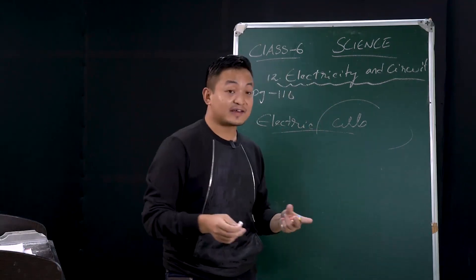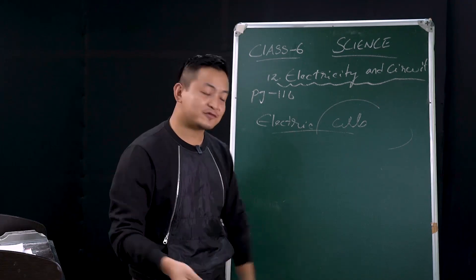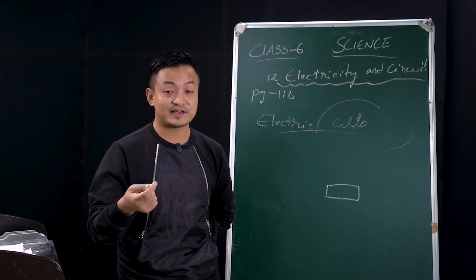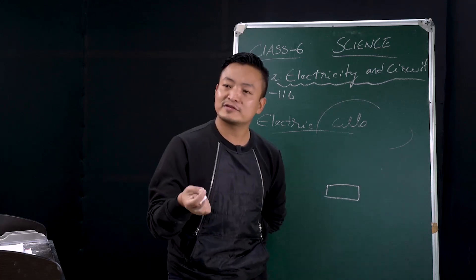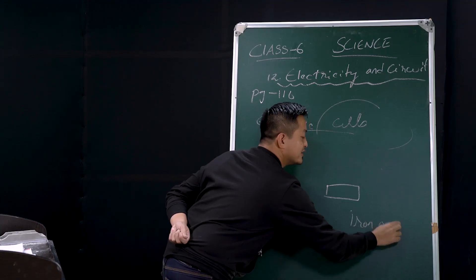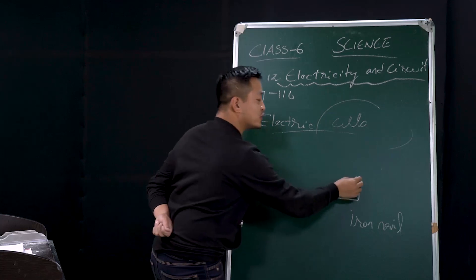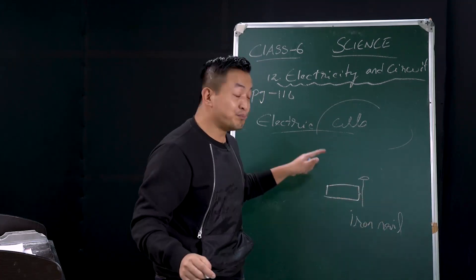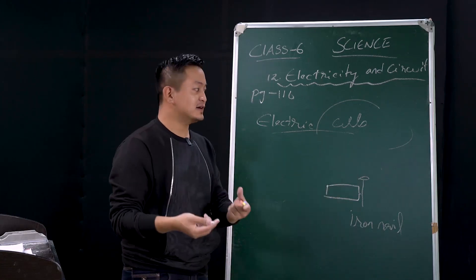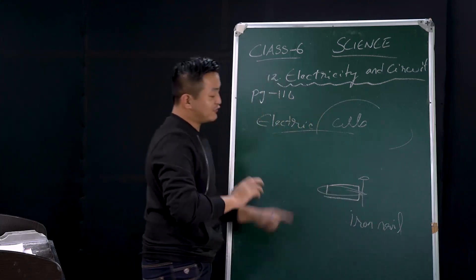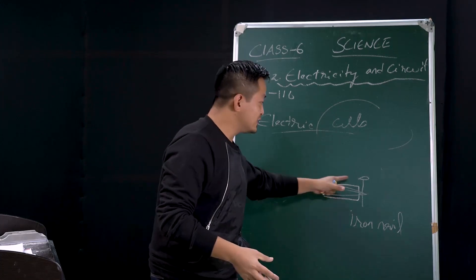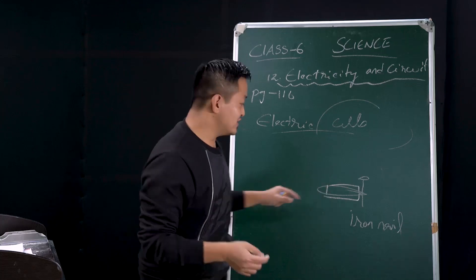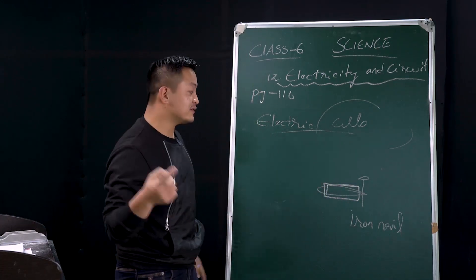Let's take a normal battery — it has a plus and a minus side. We'll also take an iron nail. We'll join this iron nail to the battery and tie it with the help of a rubber band. You can try this activity yourself at home!